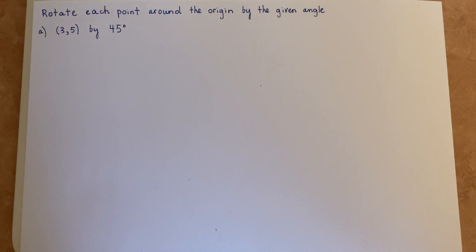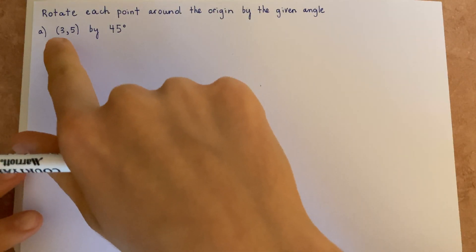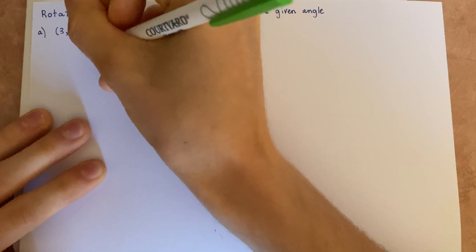Hi my dudes! In this video I'll be showing you how to rotate a point around the origin by a given angle. In this question we're asked to rotate the coordinates (3, 5) by 45 degrees.